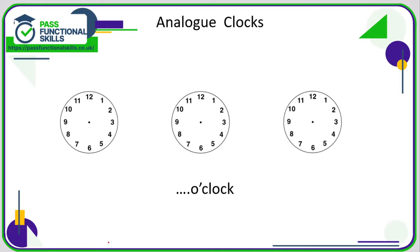Analog clocks can be a real problem for a lot of people — it's somewhat a generational thing. If you're under 30, you're probably much more familiar with digital time than analog. On an analog clock, when the longer hand is at the 12 and the shorter hand is pointing to a number, that is o'clock. So here that's exactly three o'clock. Another example: the long hand is on the 12 and the shorter hand is on the eight, so that is eight o'clock.